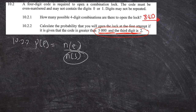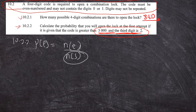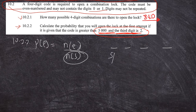Remember, 10.2.2 is connected to 10.2, so all the original restrictions still apply: the code must be even-numbered, must not contain zero or one, and digits may not be repeated. We are simply adding two more conditions: the code must be greater than 5000, and the third digit must be two. For the code to be greater than 5000, the first digit can be five, six, seven, eight, or nine.